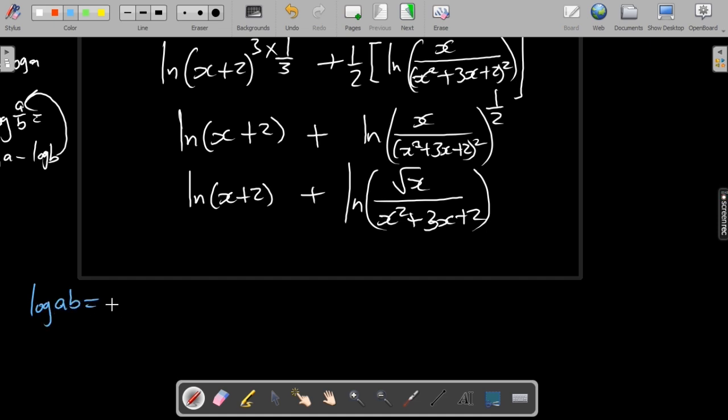Now at this stage we're ready to use yet another rule that says if you have log of a multiplied by b, you can express it as log a plus log b. If you have this, you can take it back to this form. Here we have a plus, we're adding these two, so we can multiply them.